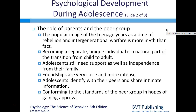Friendships during adolescence become very close and intense, and adolescents identify strongly with their peers and share intimate information with friends. Conforming to peer group standards to gain approval is a major part of this. Friends who share similar physical changes provide support without short-circuiting independence from parents; the peer group also provides a sounding board for new ideas and behaviors, and gives teenagers a sense of belonging to a world of their own.